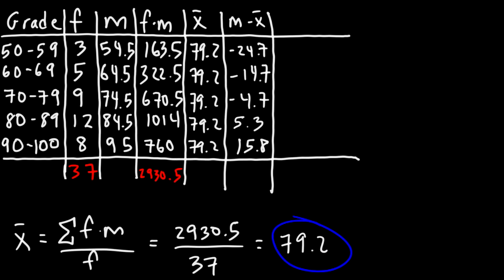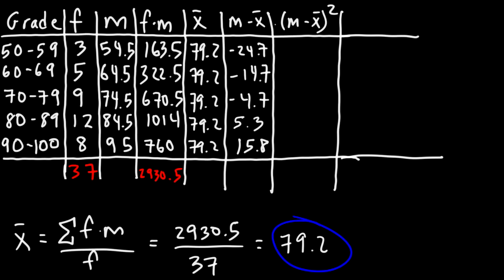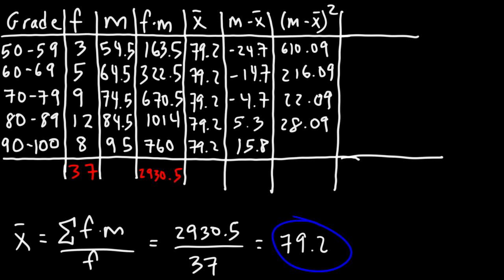For the next column, we square the previous column. Negative 24.7 squared is 610.09; 14.7 squared is 216.09; 4.7 squared is 22.09; 5.3 squared is 28.09; and 15.8 squared is 249.64.